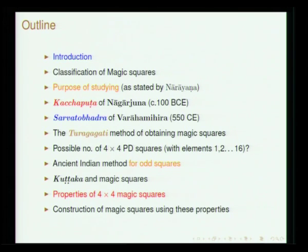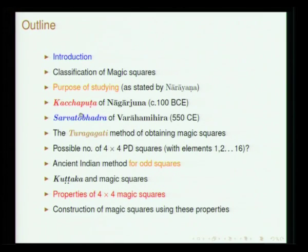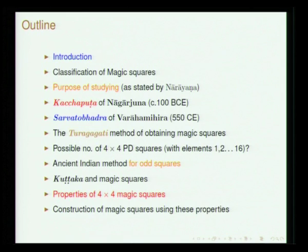I will briefly discuss the purpose stated by Narayana Pandita as to why one needs to study magic squares, and we will take a couple of examples from very ancient texts. For instance, Nagarjuna's work is referred to as Kacchaputha. The term Kacchha in Sanskrit refers to tortoise; the shell of the tortoise has a hexagonal kind of structure. The numbers in a magic square are represented in various cells which resemble that, and perhaps that is why it is called Kacchaputha.